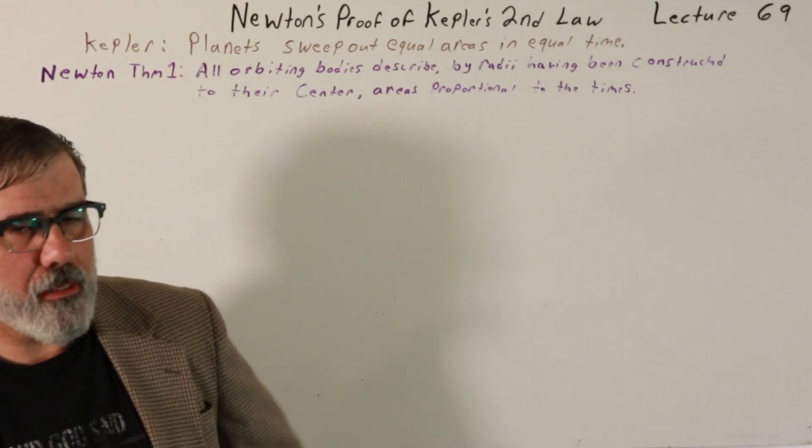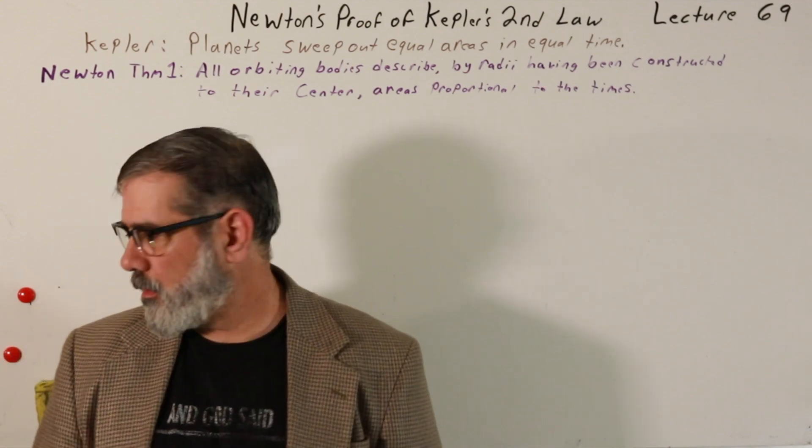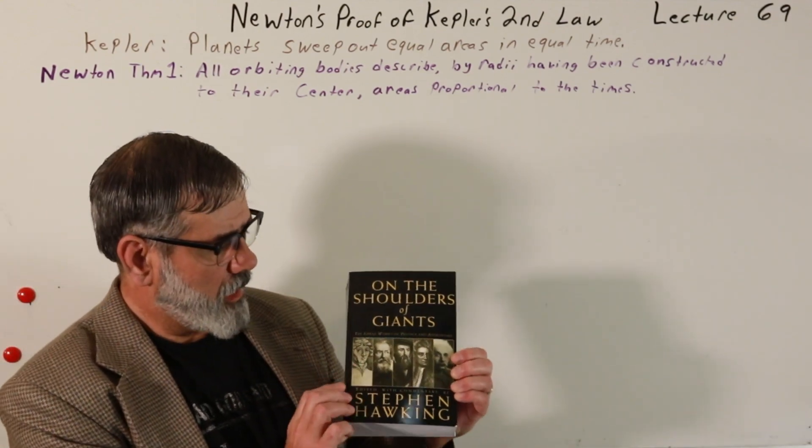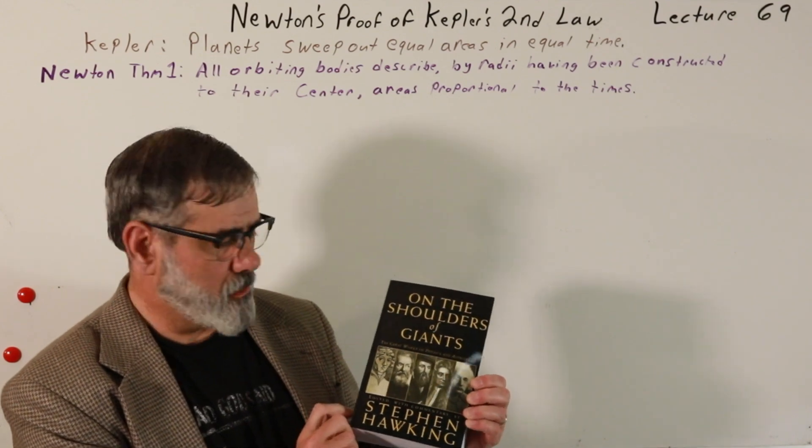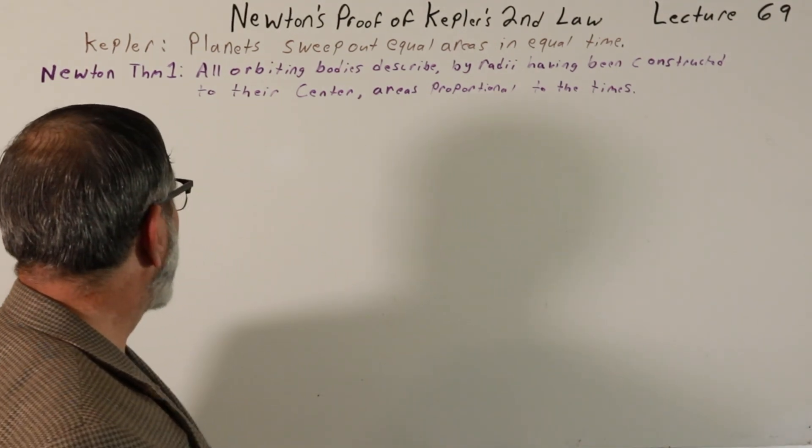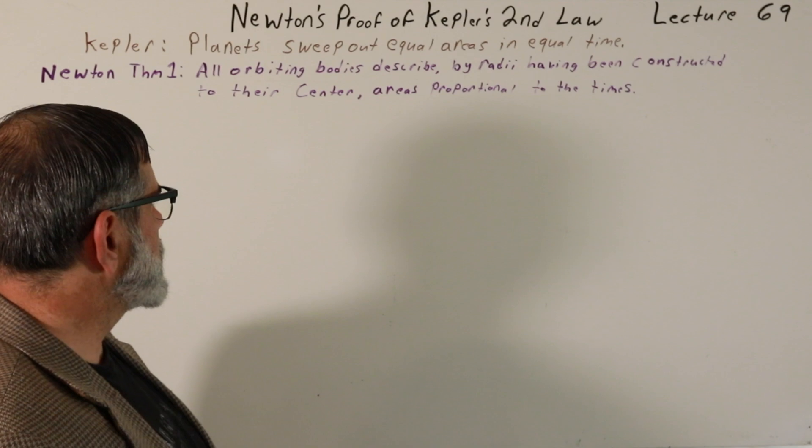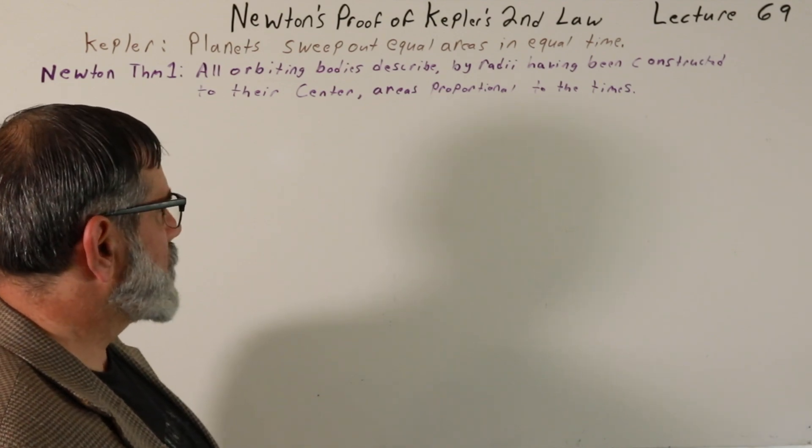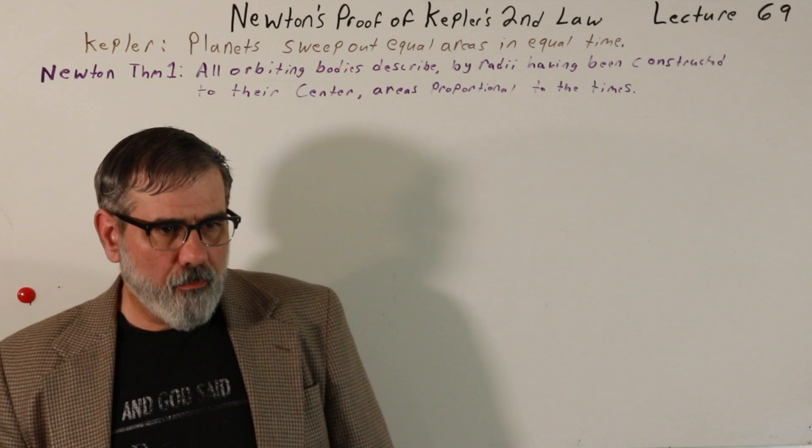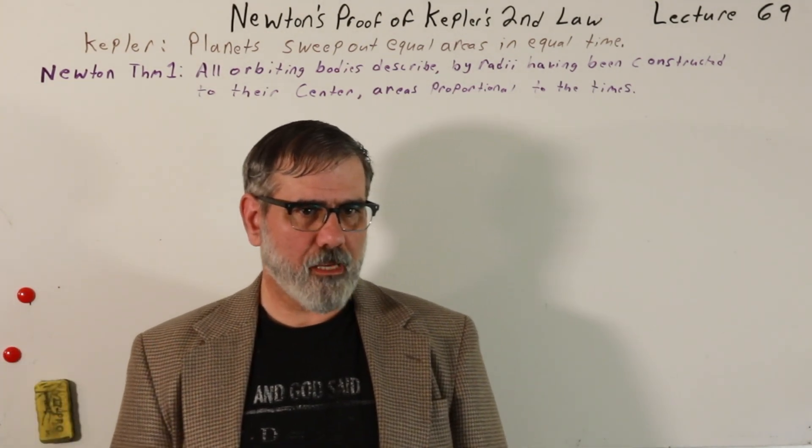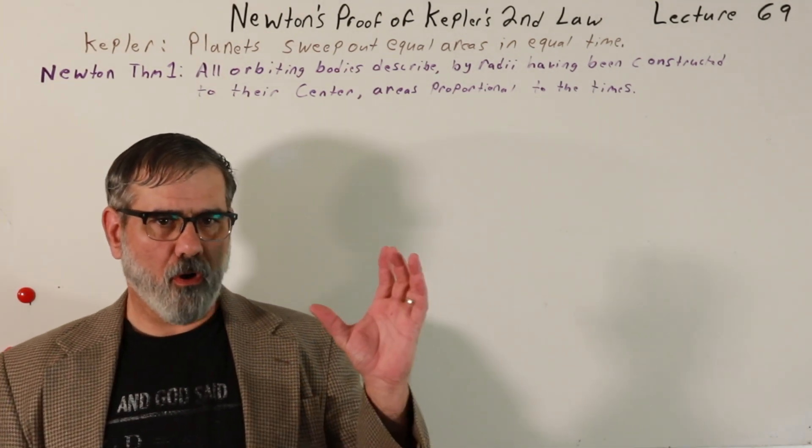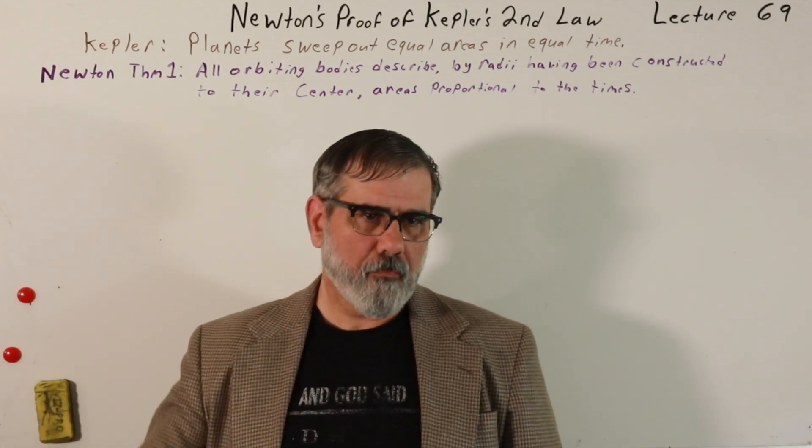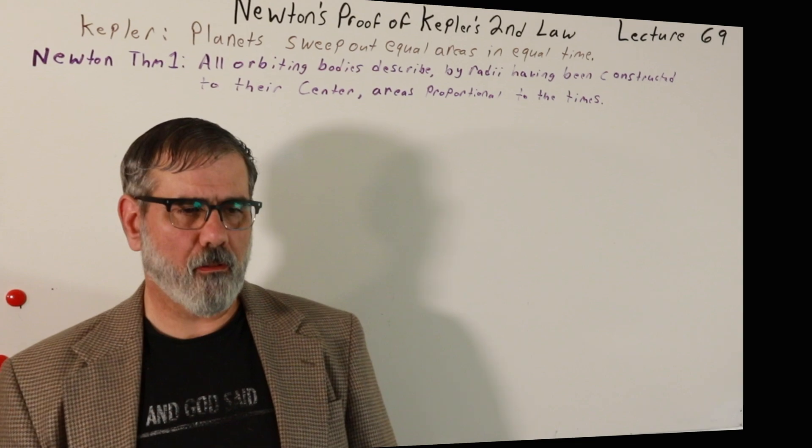It's written up here at the top. This point is addressed in Newton's work, which you can find in this nice compendium edited by Stephen Hawking. He addresses it in his Theorem 1: All orbiting bodies describe by radii having been constructed to their center, areas proportional to the times. Just like we did in the last lecture, he used a circle as the basis to demonstrate Kepler's Second Law.